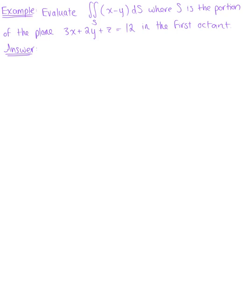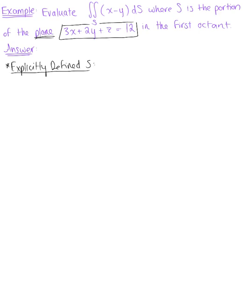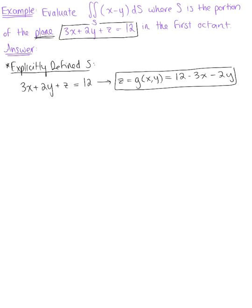The first thing we notice is how our surface is defined. We want to note that this is an explicitly defined surface. To make that clear, let's rewrite it in terms of X and Y. We have 3X plus 2Y plus Z equals 12, and solving for Z, we get a function in terms of just X and Y: Z equals 12 minus 3X minus 2Y. This is our explicitly defined surface.